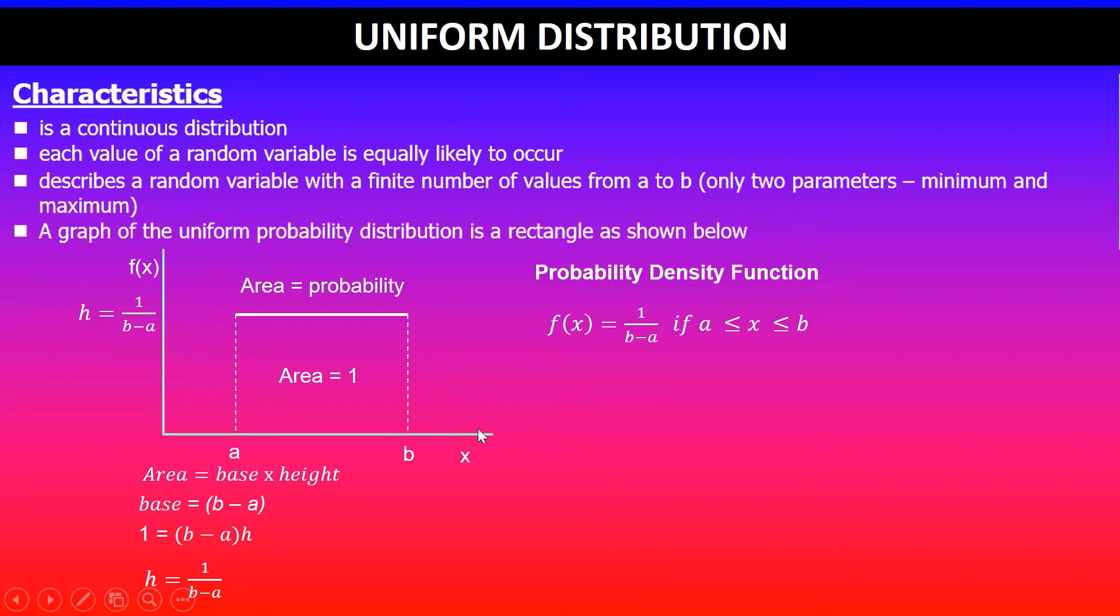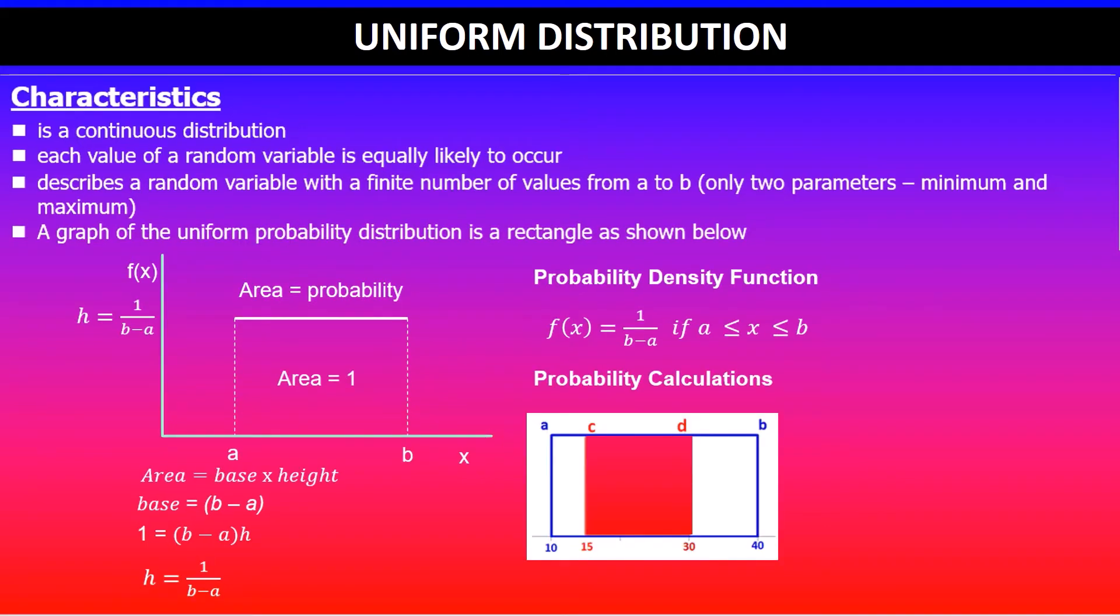So if you're given a rectangular distribution and you are finding the area shaded between c and d, then we can see that the shaded part will give you the probability.